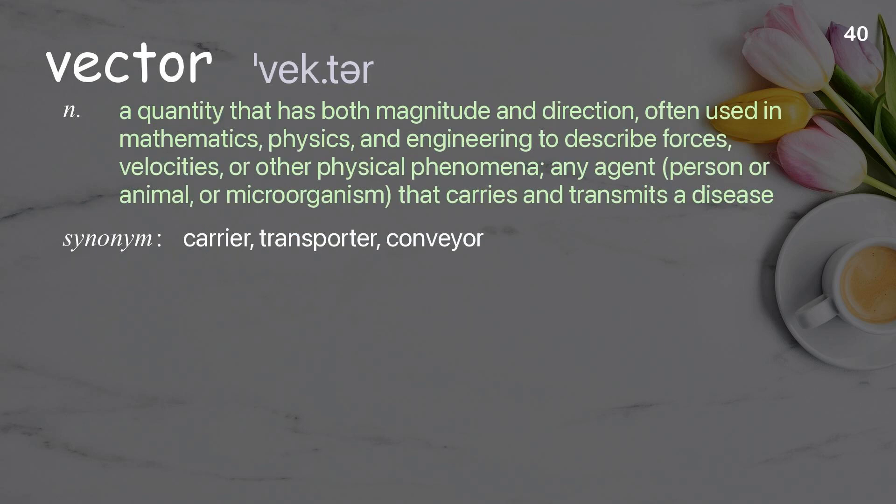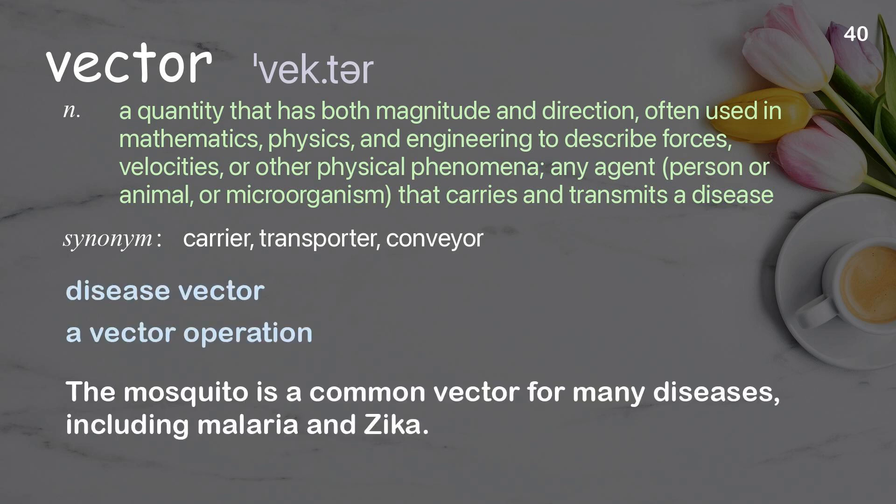Vector: A quantity that has both magnitude and direction, often used in mathematics, physics, and engineering to describe forces, velocities, or other physical phenomena. Also, any agent, person, animal, or microorganism that carries and transmits a disease. Examples: Disease vector. A vector operation. The mosquito is a common vector for many diseases, including malaria and Zika.